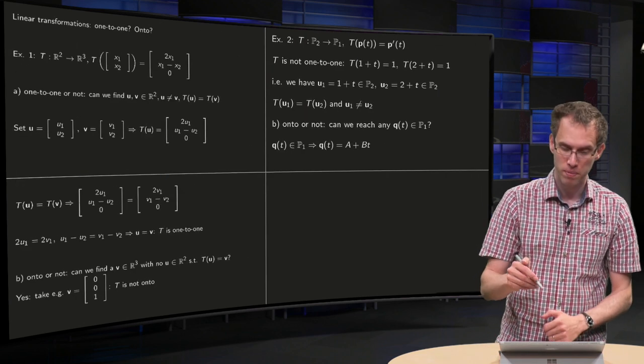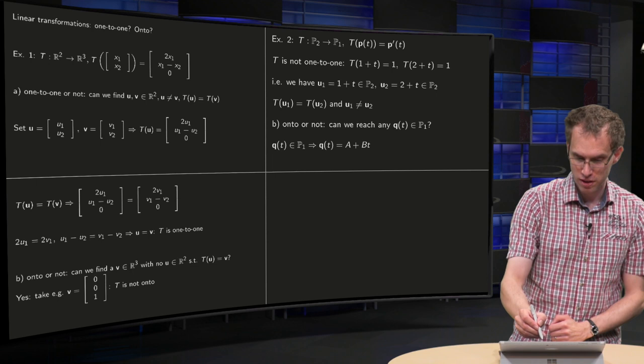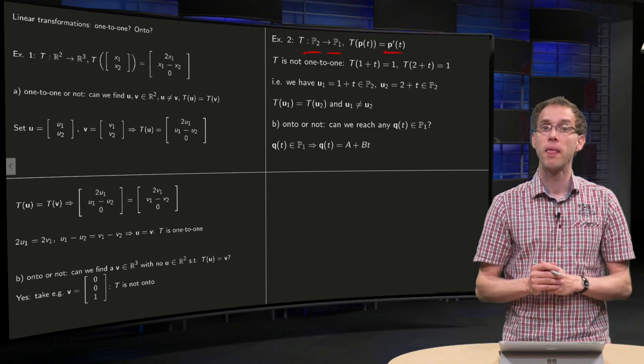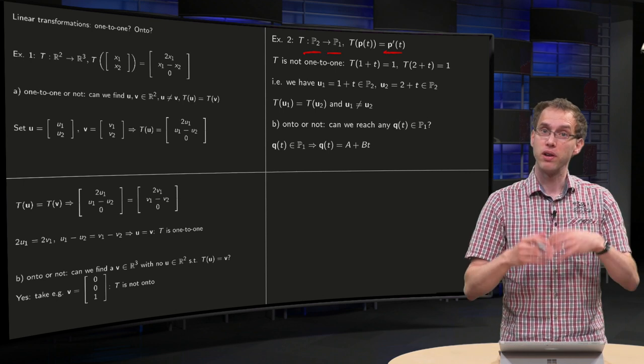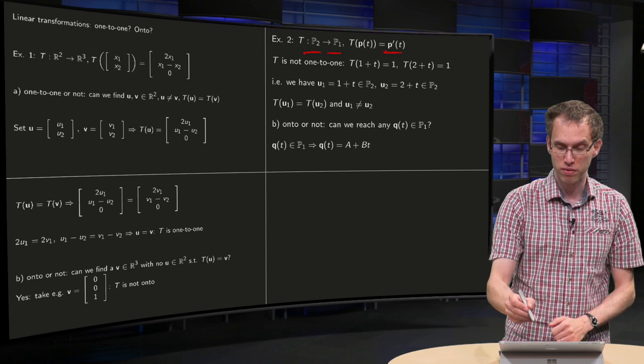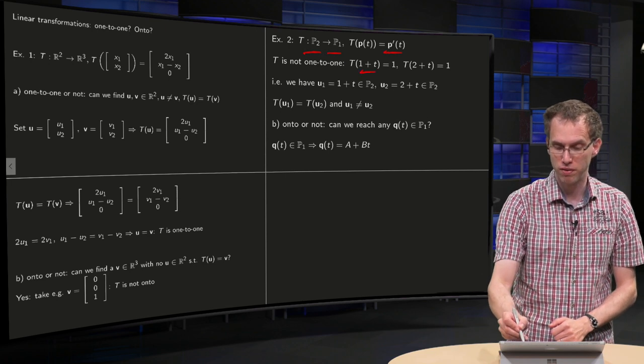Second example: T from P₂ to P₁, and you find the image by taking the derivative of p. You can easily see that this transformation is not one-to-one. If you take, for example, the function 1 plus t and the function 2 plus t,